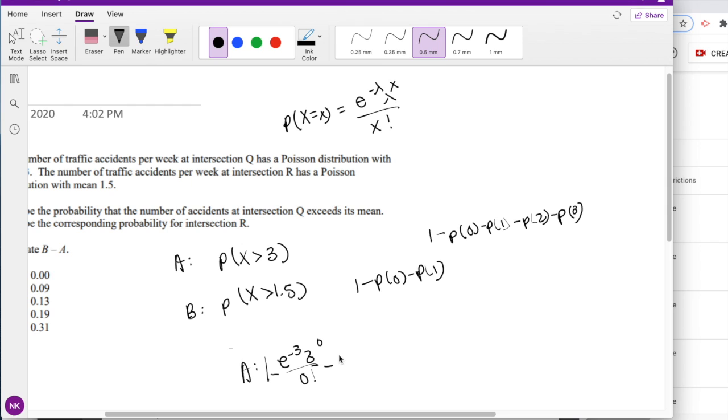1 minus this, minus e to the negative 3, 3 to the 1 over 1 factorial, minus e to the negative 3, 3 to the 2 over 2 factorial, minus e to the negative 3, 3 to the 3 power over 3 factorial.